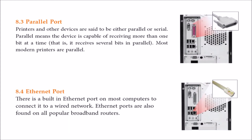Then the parallel port — as you see here — this is the parallel port. In a parallel port, data does not travel one by one but simultaneously; the bits go in parallel. The data is nothing but 0s and 1s. Printers and other devices can be either parallel or serial; most printers use the parallel port.